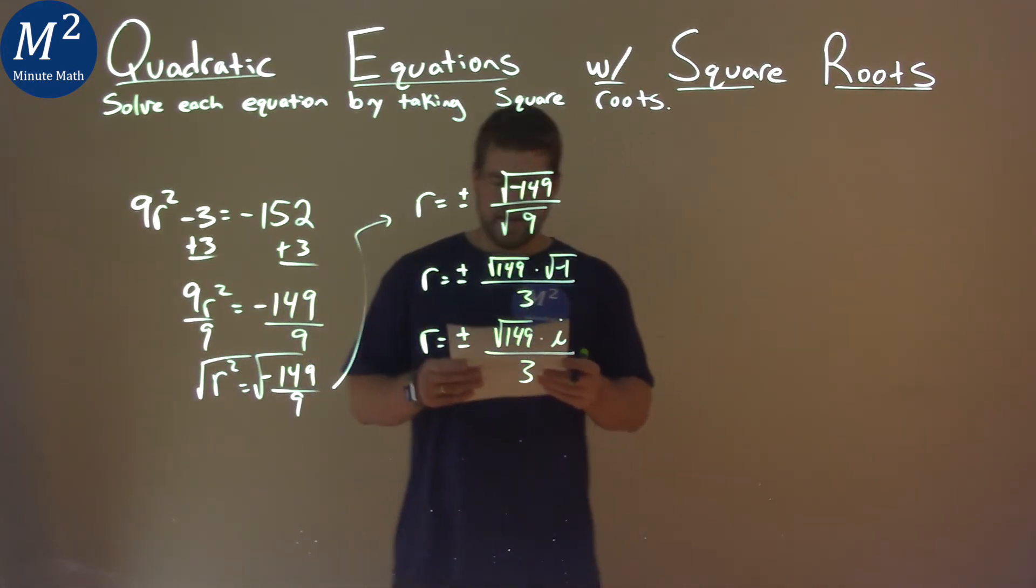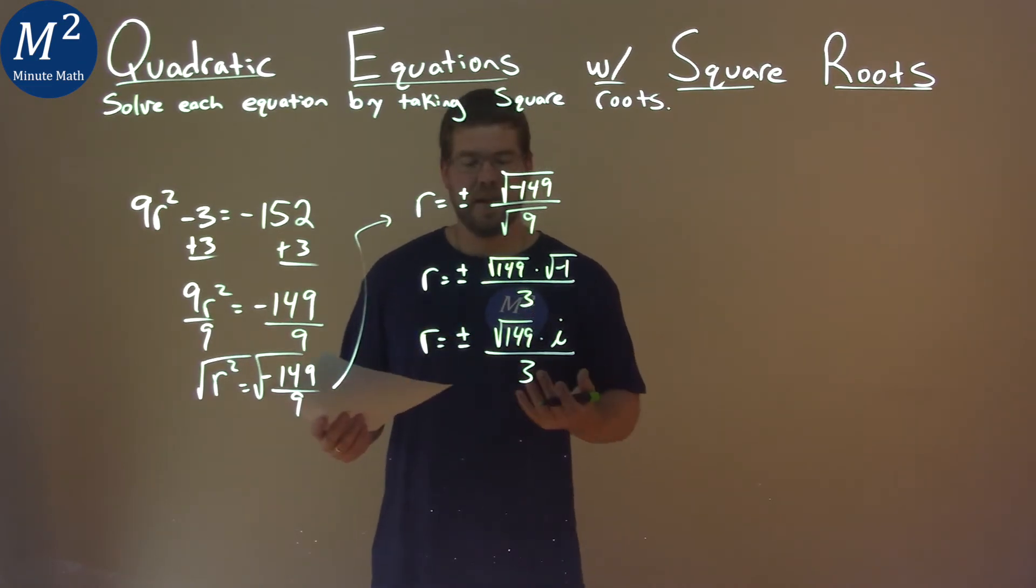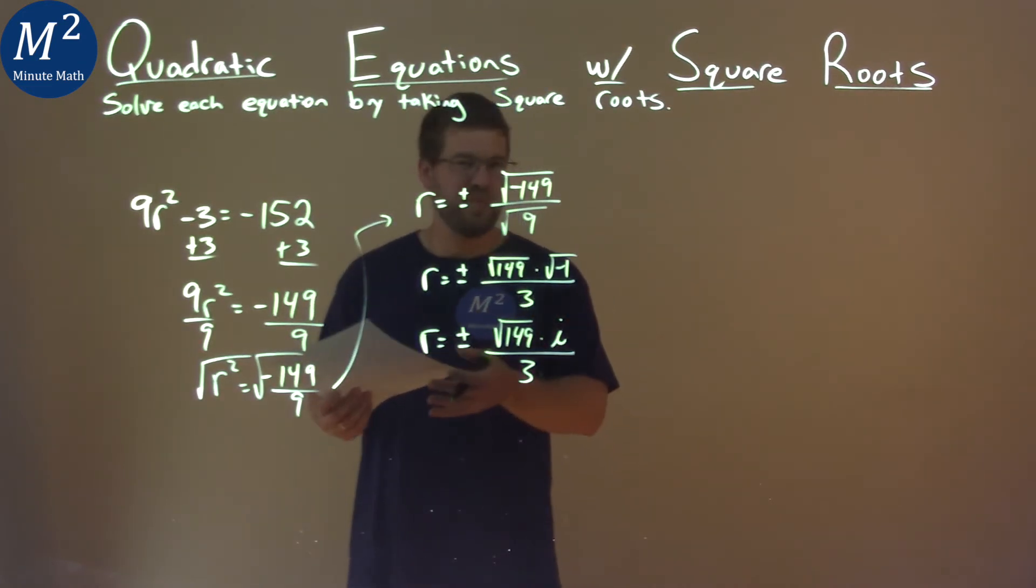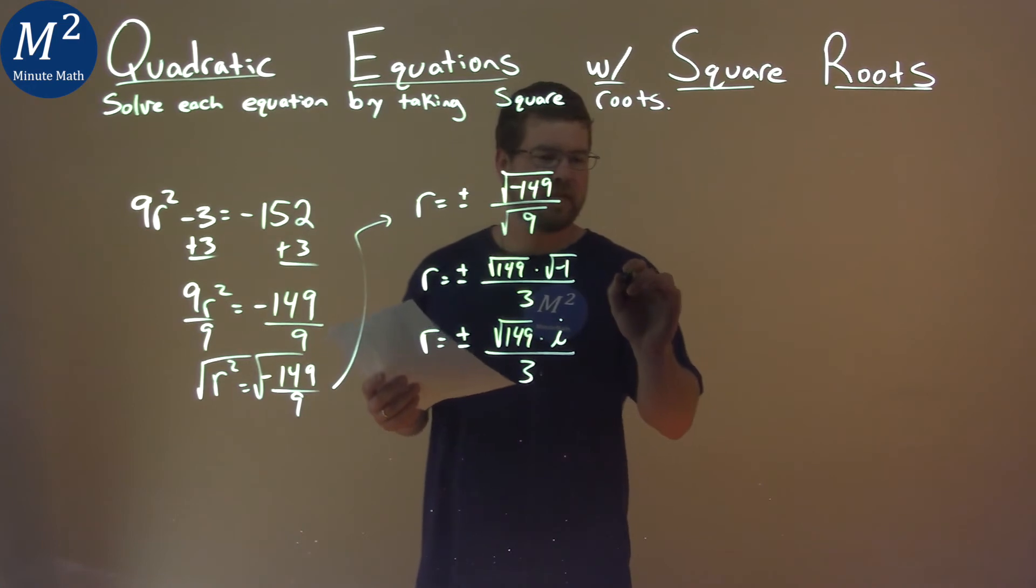The square root of 149 actually doesn't break down or simplify anymore. So, we're basically done, but writing this as our final answer here...